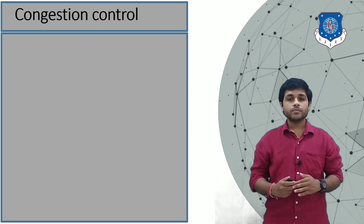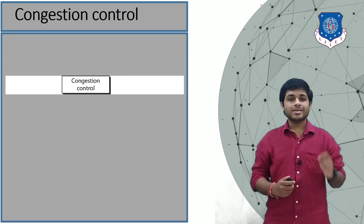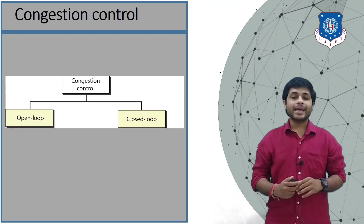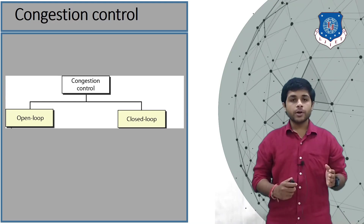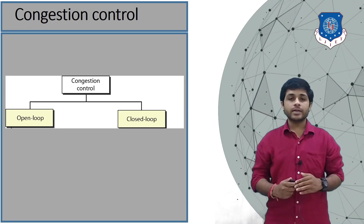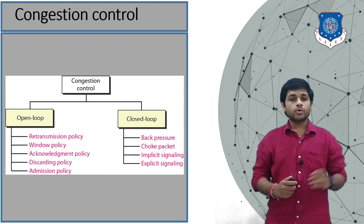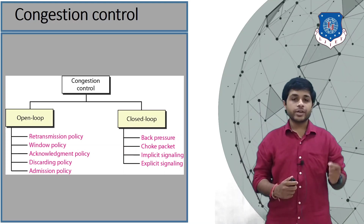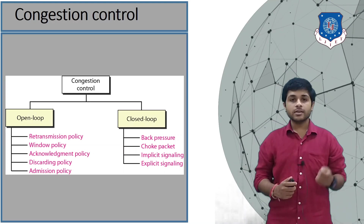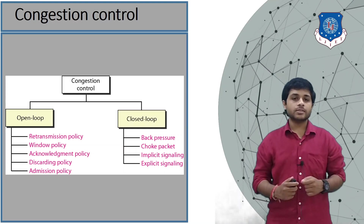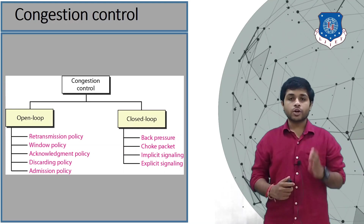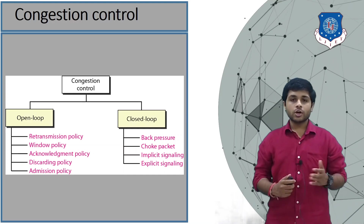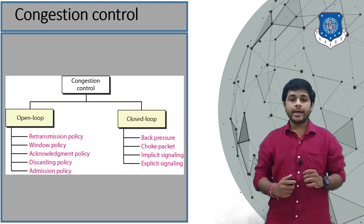Congestion control is divided into two types: open loop congestion and closed loop congestion. The open loop congestion is further divided into types such as retransmission policy, window policy, acknowledgement policy, discarding policy, and admission policy. The closed loop congestion has types such as back pressure, choke packet, implicit signaling, and explicit signaling.